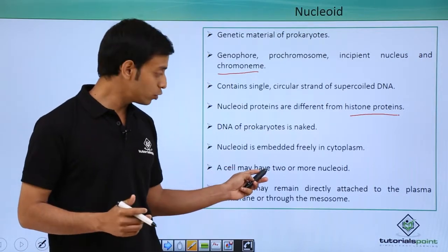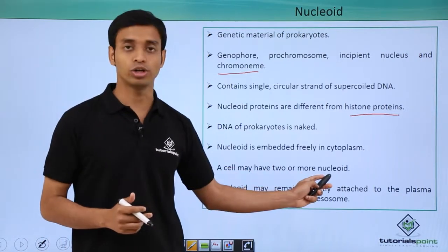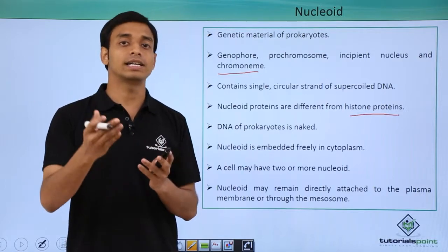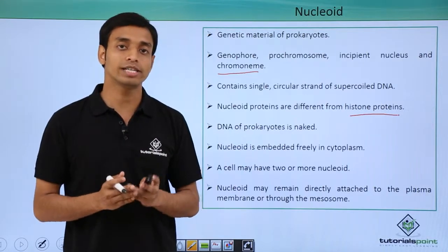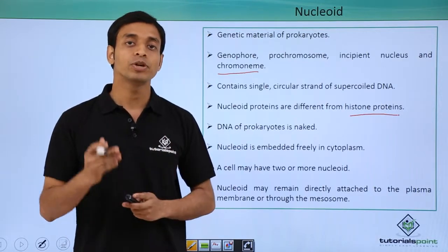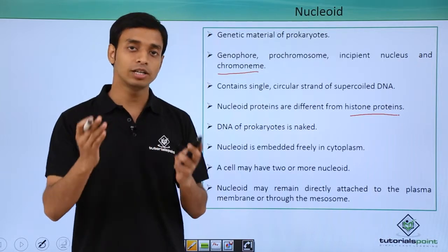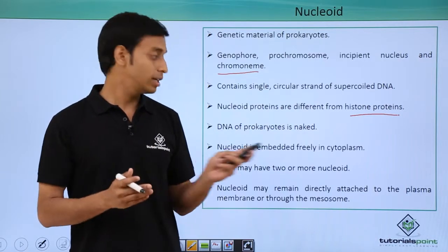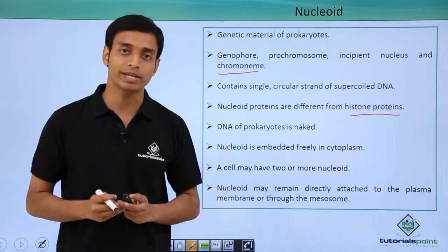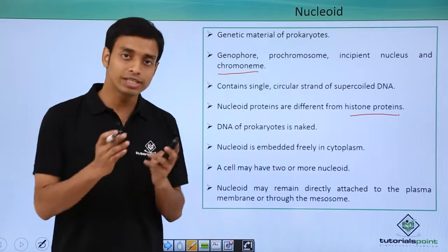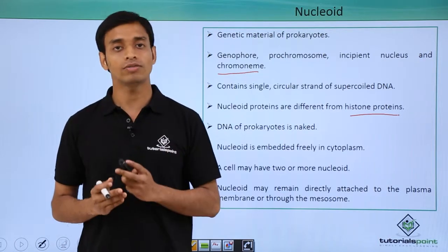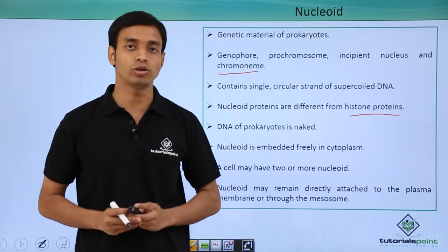A cell may have two or more nucleoids. These multiple nucleoids are nothing but replicated copies of the same nucleoid which is present inside the bacterial cell.